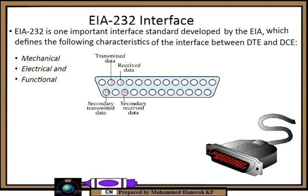Hi all, welcome to this video on computer networks. In this video we are going to discuss the EIA-232 interface. Many standards have been developed to define the connection between DTE and DCE. Each standard provides a model for the mechanical, electrical, and functional characteristics of the connection. EIA-232 is an example of this type of interface, developed by the EIA — the Electronic Industries Alliance.